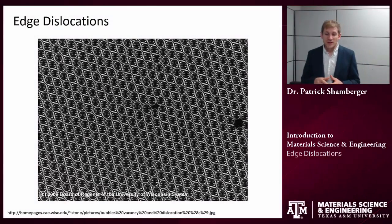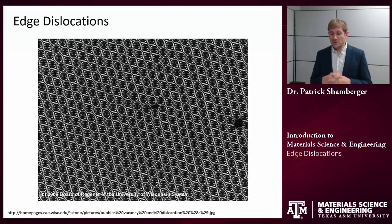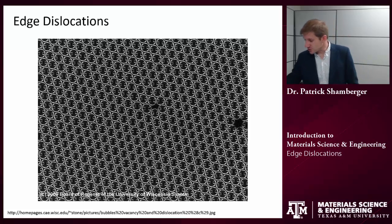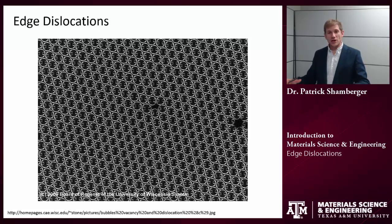Howdy. The purpose of this video is to describe one specific kind of a linear defect, and that is an edge dislocation. We're going to start off by showing you what an edge dislocation is. What I'm showing you here is a bubble array, so this is a whole bunch of bubbles floating on the surface of some liquid.